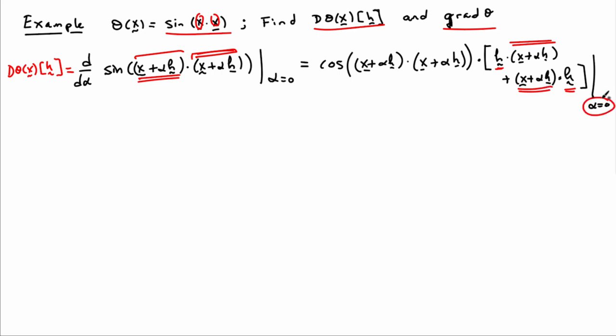And then all of this has to be evaluated for alpha equals zero. So when you set alpha equal to zero, lots of terms disappear. And we'll end up with cosine of x dot x times h dot x plus x dot h. And h dot x is equal to x dot h. So I can combine those two terms together. And I'll end up with two times cosine of x dot x times x dot h. And so that's the directional derivative.